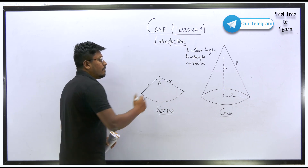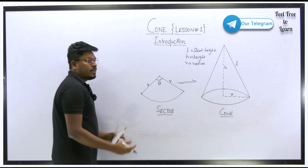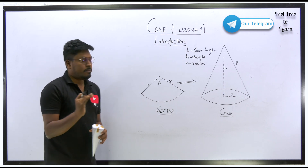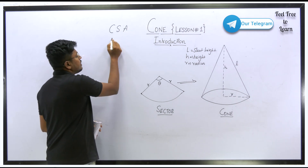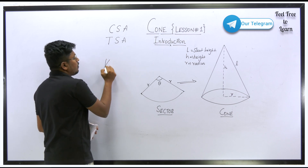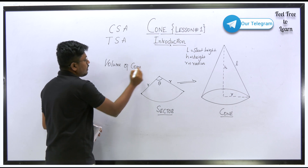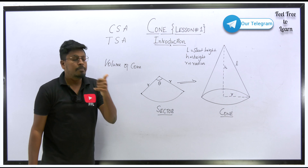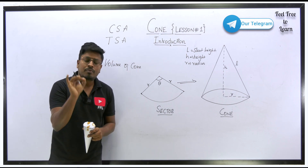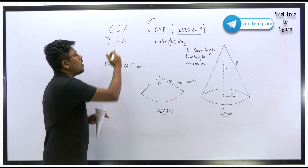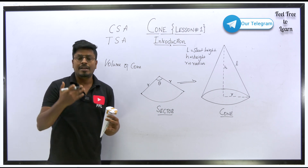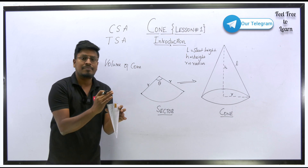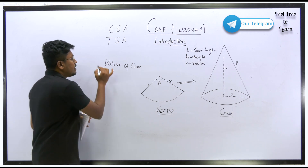The cone is formed only from the sector. Now entering the formulas of the cone — there are three important ones: curved surface area, total surface area, and volume of the cone. For competitive exams, you don't need to know how these formulas are derived; that is a waste of time. Just memorize the formulas and understand the concepts.